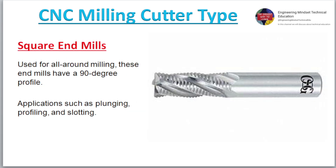Square End Mills. Used for all-around milling, these end mills have a 90-degree profile. Applications include plunging, profiling, and slotting.